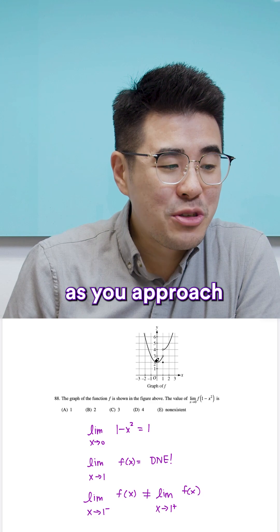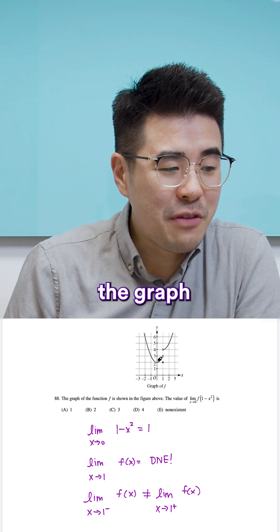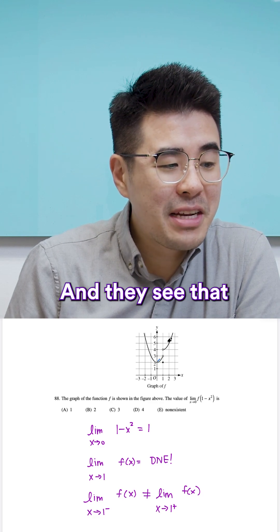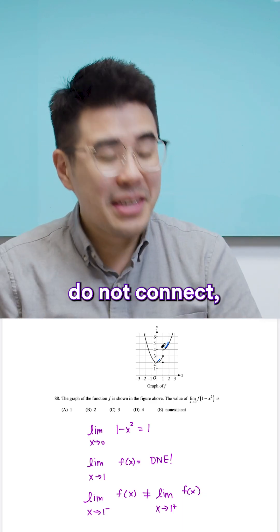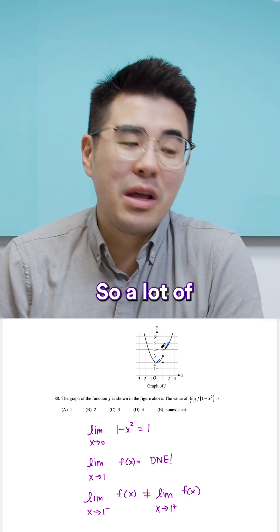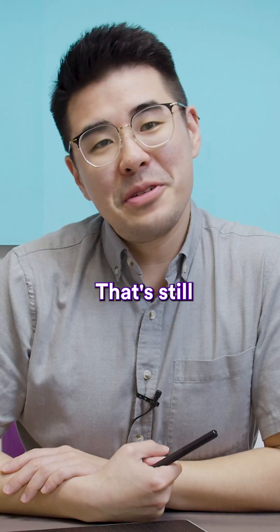They see that as you approach 1 from the left, the graph approaches 3. And they see that as you approach 1 from the right, the graph approaches 4. And since those points do not connect, then the limit does not exist. So a lot of students answer e. That's still not correct.